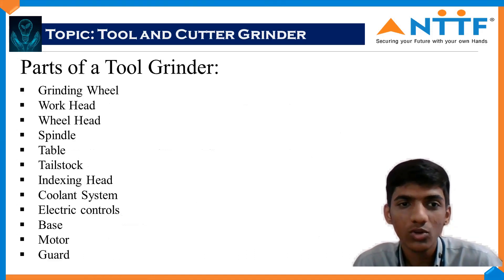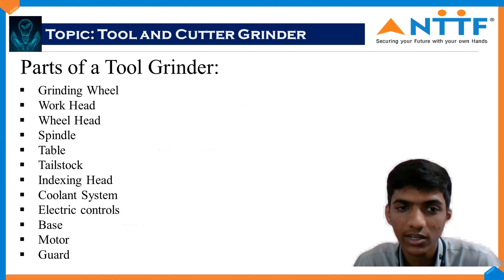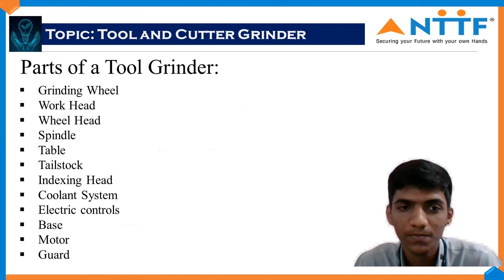Parts of a tool and cutter grinder include: the grinding wheel, work head, wheel head, spindle, table, tail stock, indexing head, tool and cutter system, electric controls, base, motor and guard, etc.